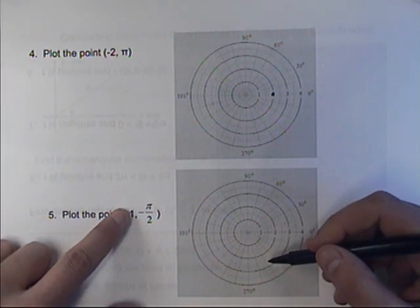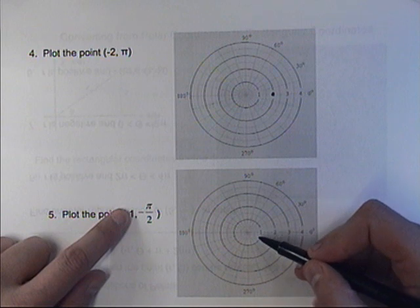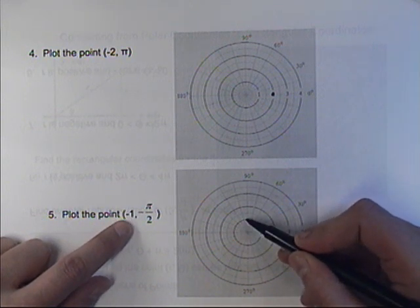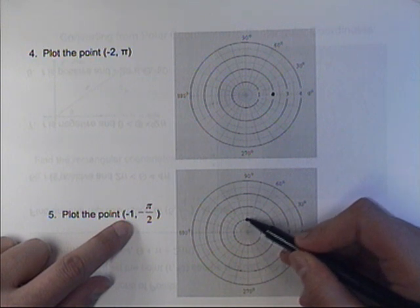Same thing here. If I pretend this is 1, I'd first go to 1, I'd rotate down to π over 2, and then because the radius is negative 1, I would flip that across the origin to the other side.